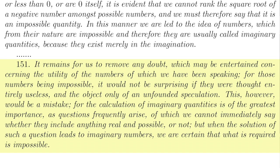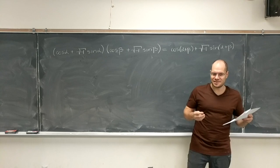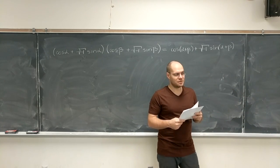It remains for us to remove any doubt which may be entertained concerning the utility of the numbers of which we have been speaking. For those numbers being impossible, it would not be surprising if they were thought of as entirely useless, and the object only of an unfounded speculation. This, however, would be a mistake, for the calculation of imaginary quantities is of the greatest importance. And then he gives one example of why they are. As questions frequently arise, of which we cannot immediately say whether they include anything real or impossible, or not. But when the solution of such a question leads to imaginary numbers, we are certain that what is required is impossible. So that is just one excerpt. And you can kind of see all of the doubts in some way addressed, or at the very least acknowledged.